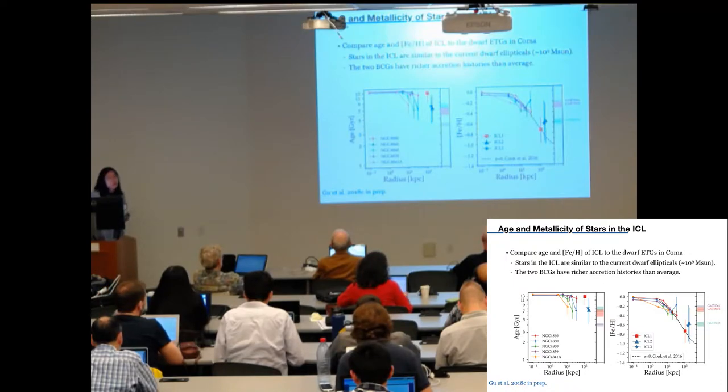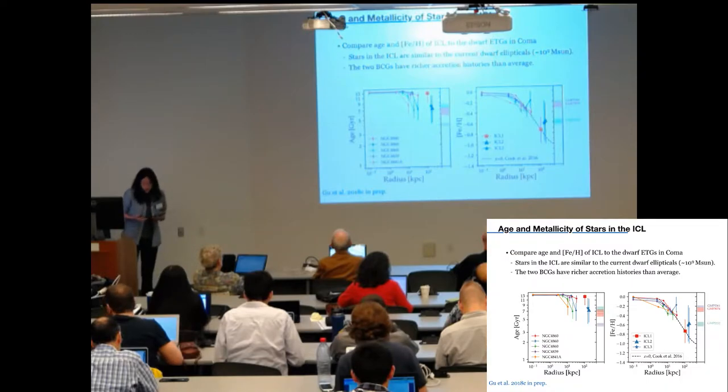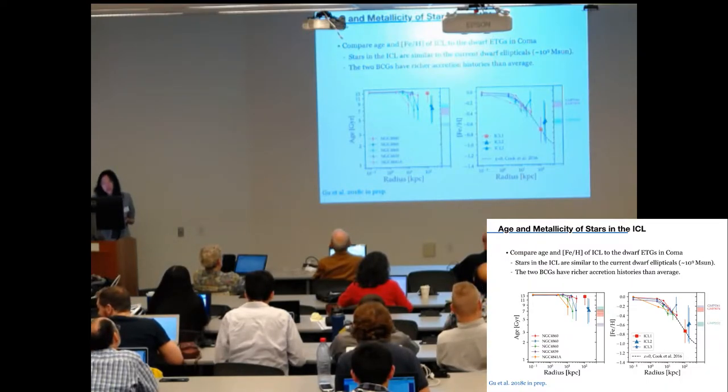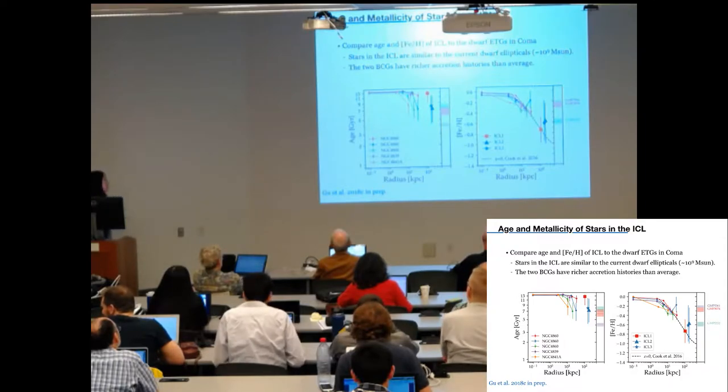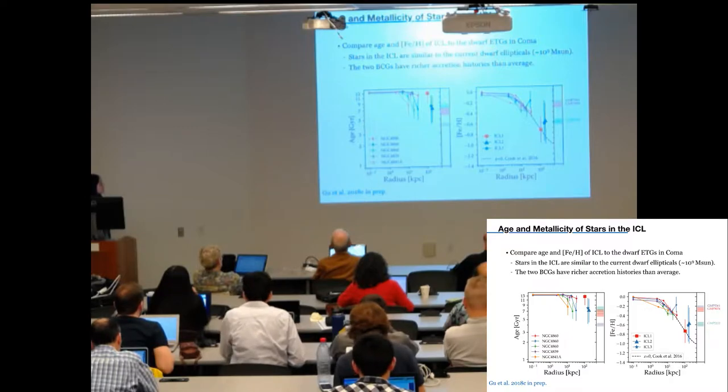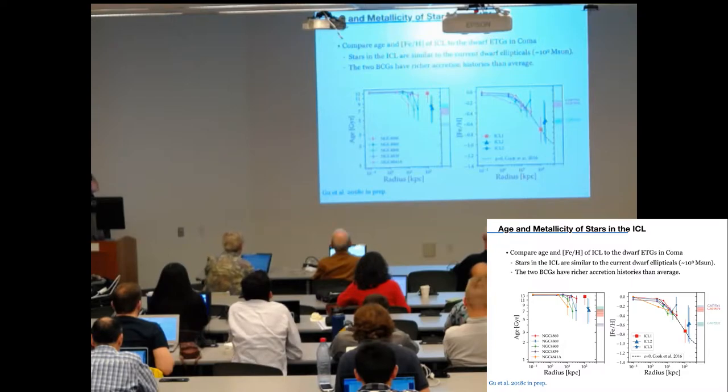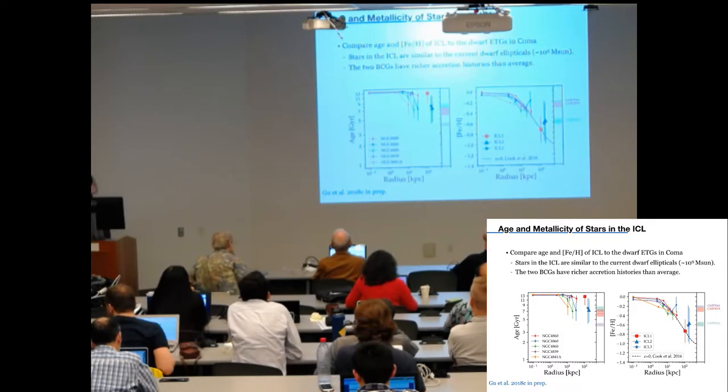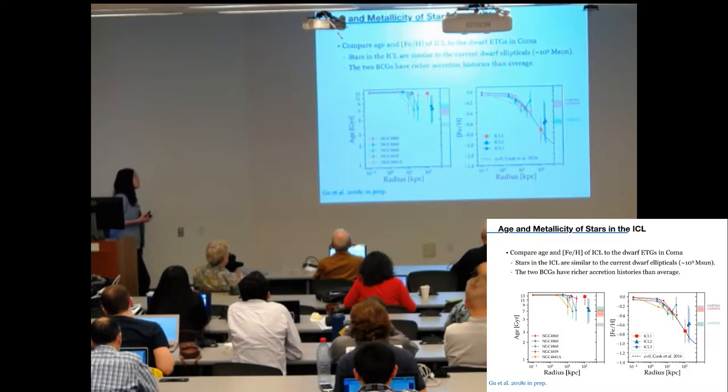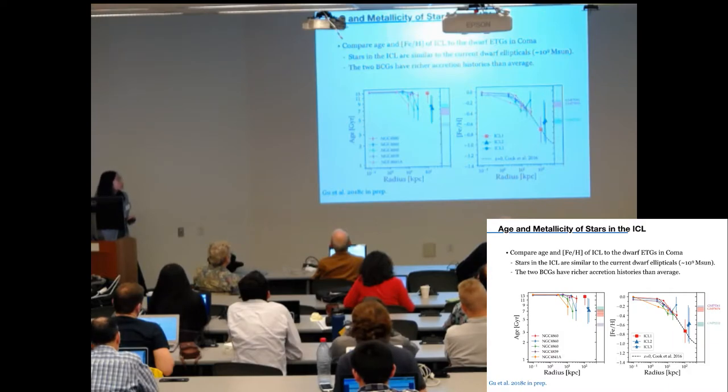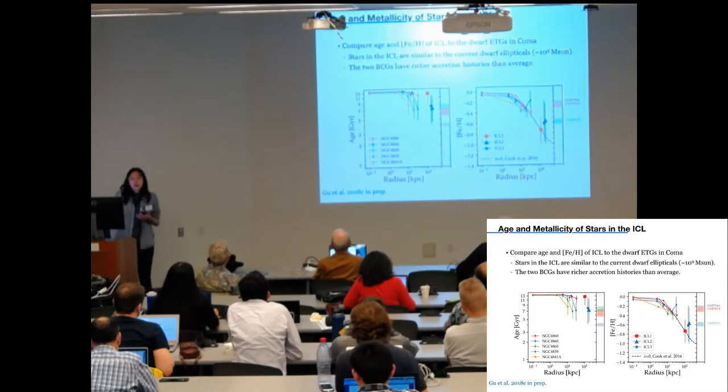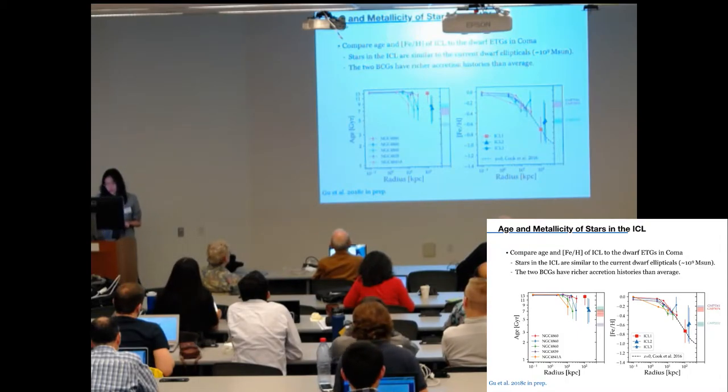Earlier in my talk, I showed a prediction of metallicity profile from simulation. So I want to end my talk with a comparison to that. I'm comparing the gradients predicted by the Illustris simulation at the outskirts. This is from the most massive stellar mass bin at redshift zero. We can see that the three ICL data points, they are consistent or even lie above the prediction from simulation. So I think this indicates that our observations are consistent with the hierarchical assembly picture in the simulation. And it might indicate that the Coma cluster has a richer accretion history than average.